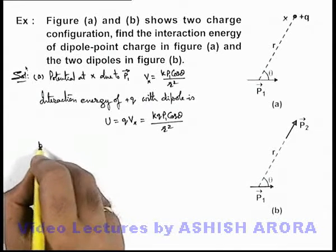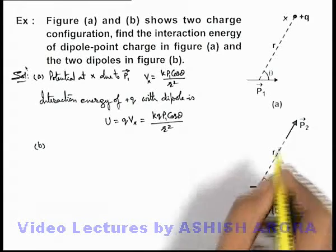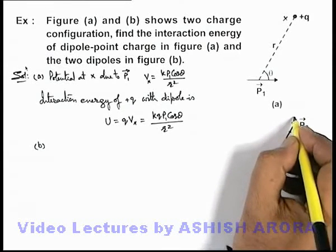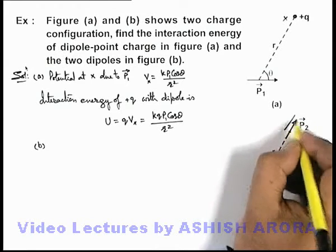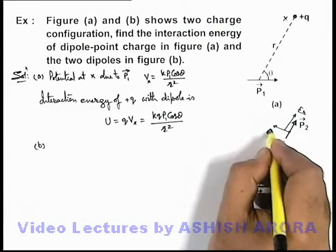Now for the situation (b), if we just have a look, then due to this dipole p1, the electric field at the location of p2 in radial direction can be written as Er, and in transverse direction it'll be E theta.